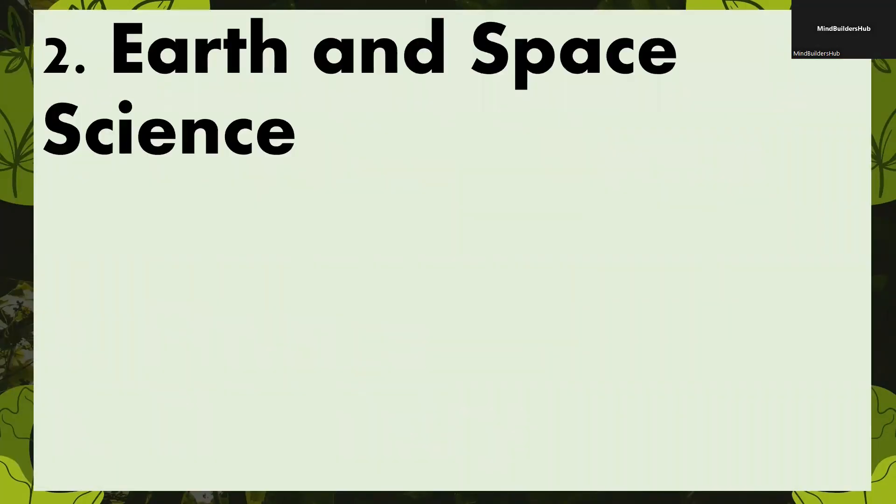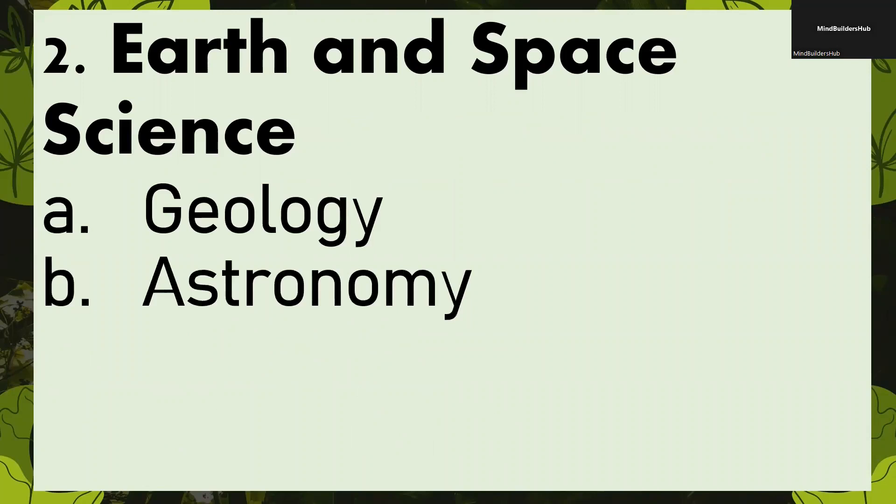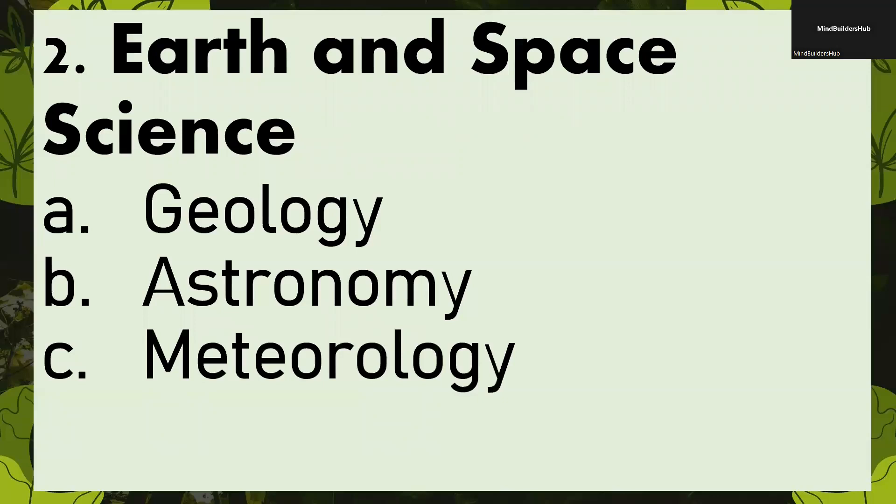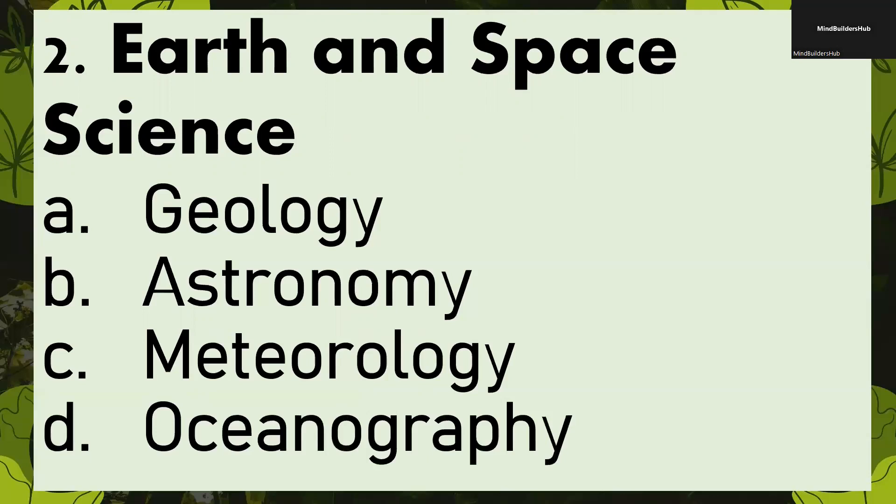However, in earth and space science, under this is geology or the study of the earth, geo means earth, astronomy or the study of the universe, any heavenly bodies, their origin, meteorology if it has something to do with the weather and its phenomena or our atmosphere and its phenomena, and of course oceanography. All the things that we need to know, whether that's plants or animals that live in water.